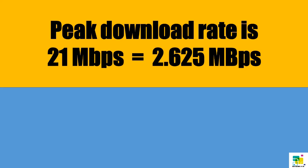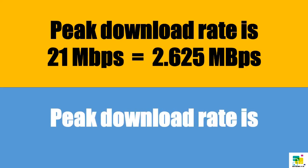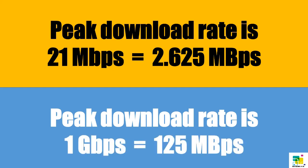In 3G technology, peak download rate is 21 Mbps, which is equal to 2.6 MB/s. But in 4G technology, peak download rate is 1 Gbps, which is equal to 125 MB/s.